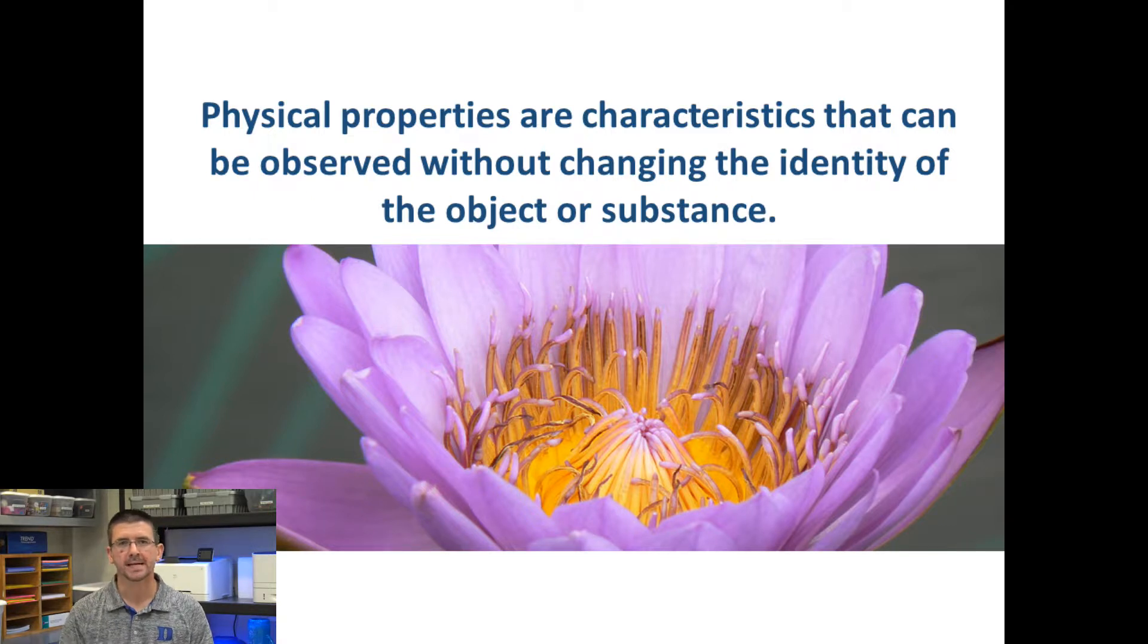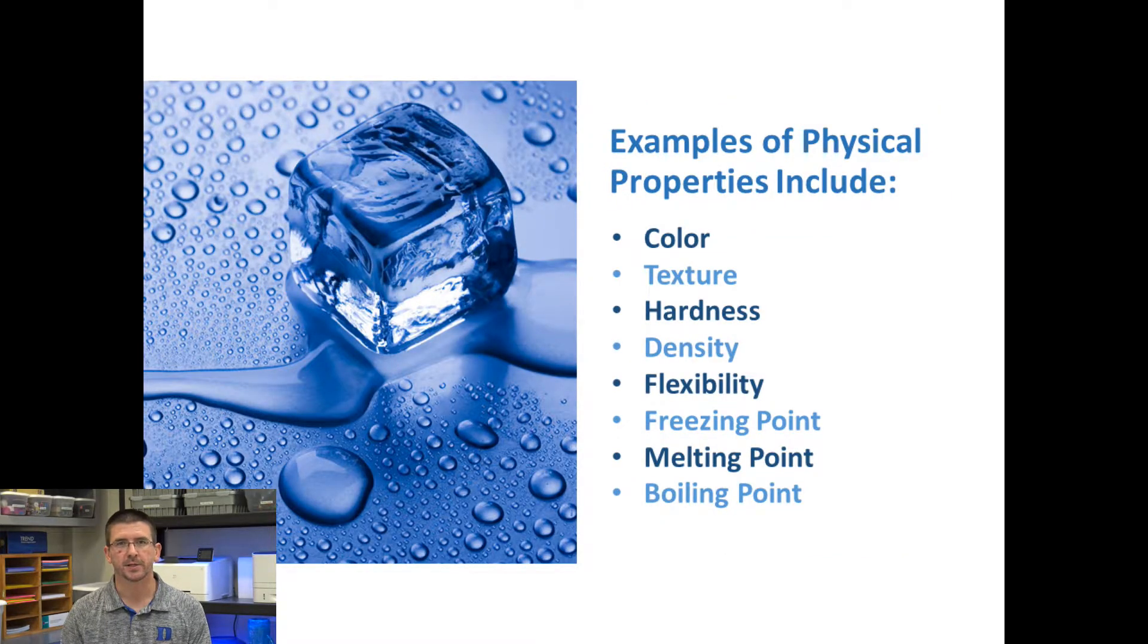Physical properties are basically any characteristics that we can observe without changing the identity or chemical composition of the material we're observing. For instance if you look at the color of an object you don't have to change the object to observe or measure its color.